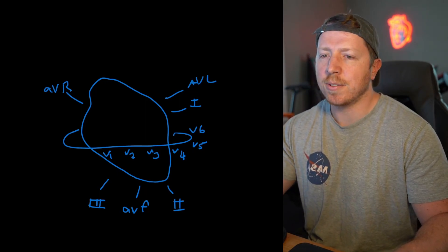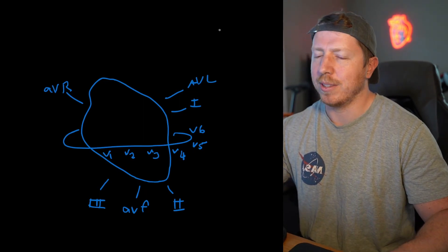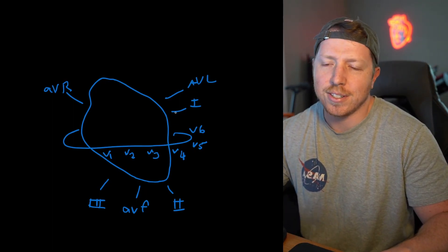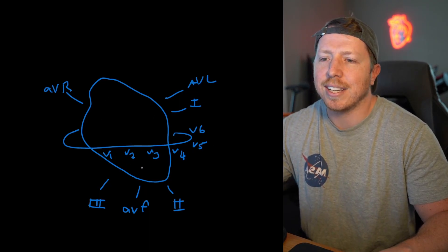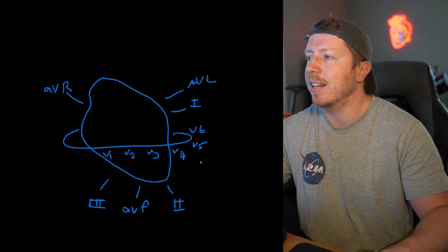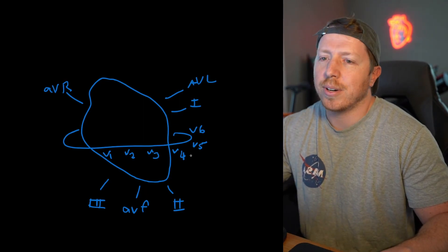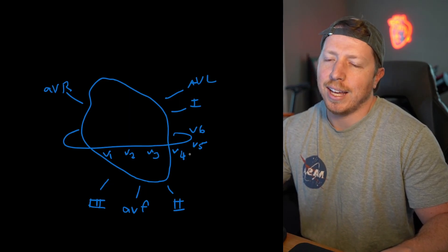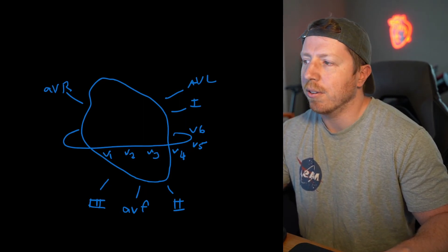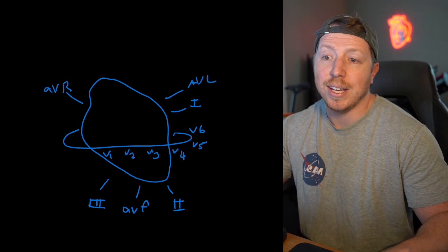That's the basics of how I learned STEMI locations along with the associated coronary arteries for the CCRN. I know people will ask how you draw something like that on your test — they give you paper for math equations, so this is literally what I draw when I sit down. It doesn't have to be perfect; it looks like a potato with leads around it, but it gives me the same information as the professional graphic. It made those STEMI questions on the CCRN so much easier.